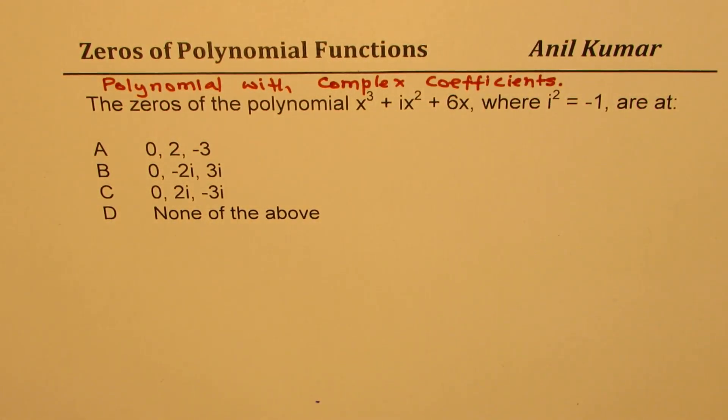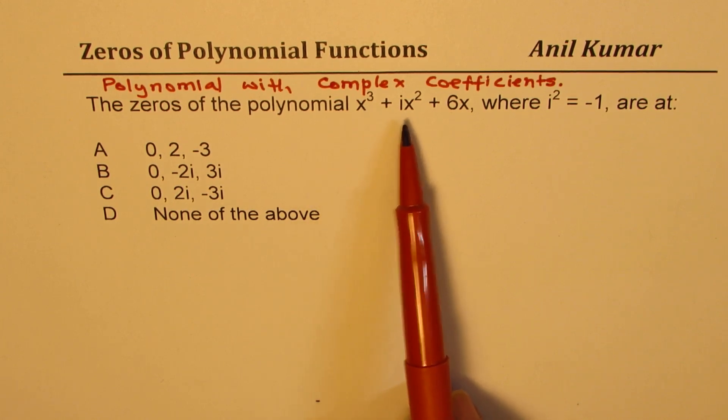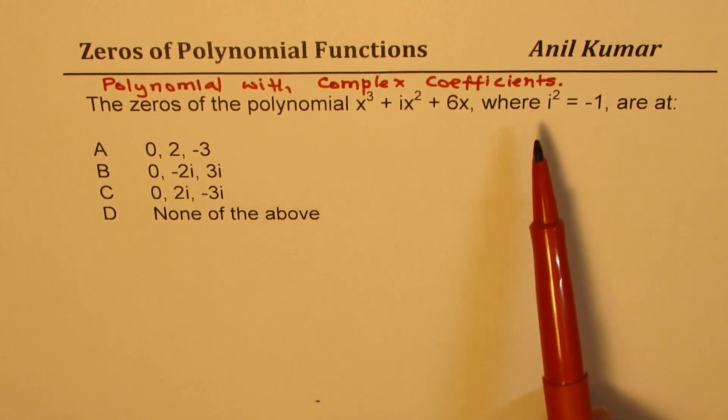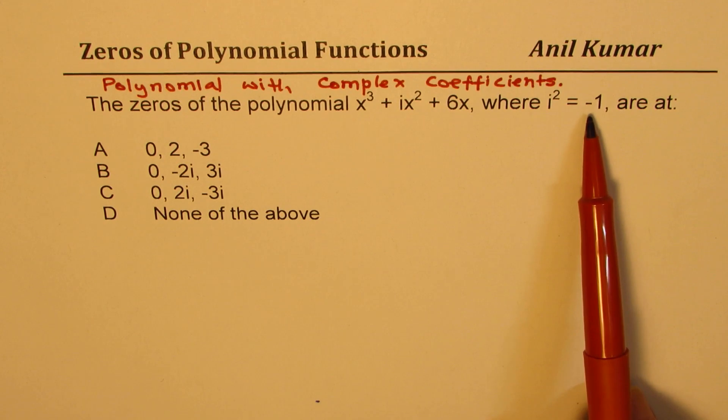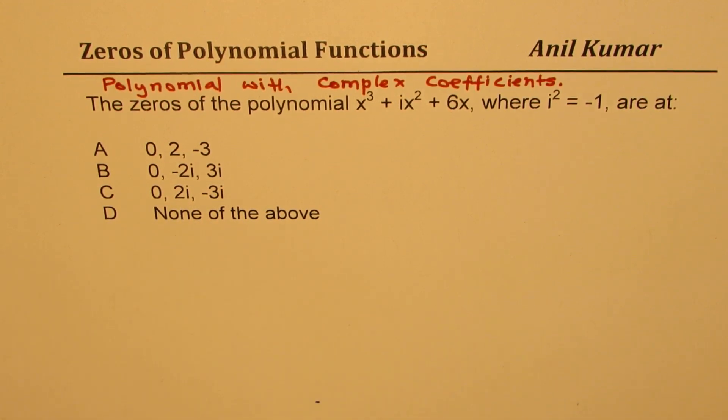This is a very important question based on previous test papers. The question here is: the zeros of the polynomial x³ + ix² + 6x, where i² = -1, are at: A) 0, 2, -3; B) 0, -2i, 3i; C) 0, 2i, -3i; or D) none of the above. You can always pause the video, answer this question, and then look into my suggestions.